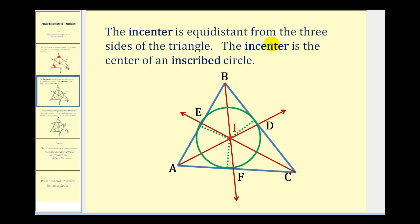This incenter is equidistant from the three sides of the triangle. Remember, when we refer to distance from a point to a segment, the distance would be the length of the segment that's perpendicular to the segment — so this would be a right angle here, this would be a right angle here, and this would be a right angle here. The distance is not measured along the angle bisector. And as you can see, since the incenter is equidistant from the three sides of the triangle, we can construct a circle inside the triangle. So the incenter is the center of what we call an inscribed circle.